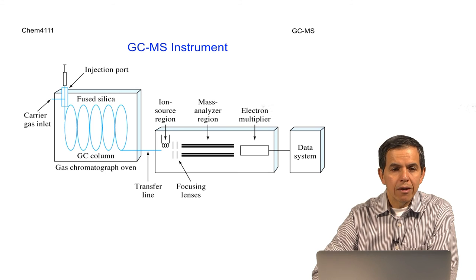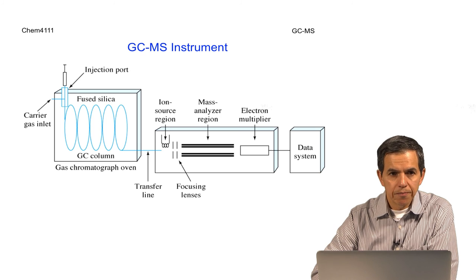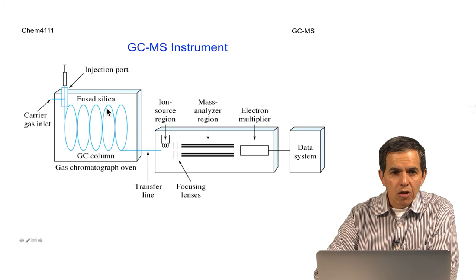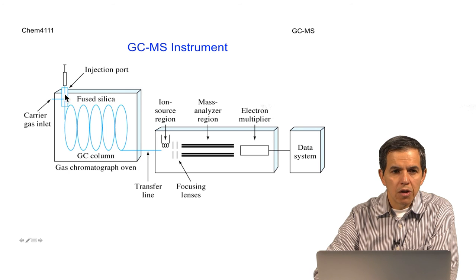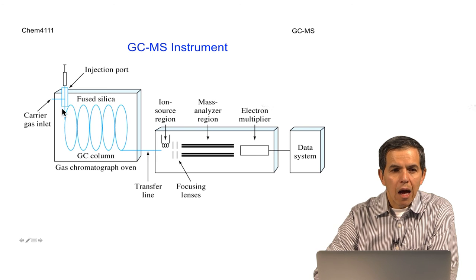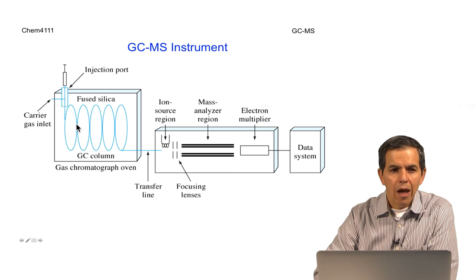In order to implement and use this technique in this experiment, we would be using a GC-MS instrument. This instrument consists of an injection port in which the sample is delivered through the syringe, a column that is kept at high temperature and through which the carrier gas will carry the different analytes as they partition and interact with the column.